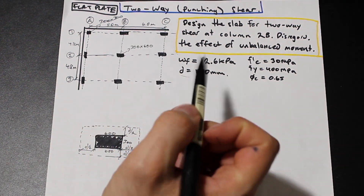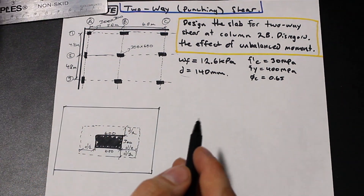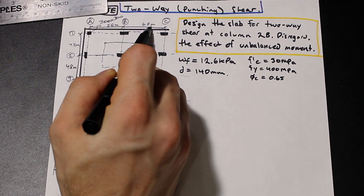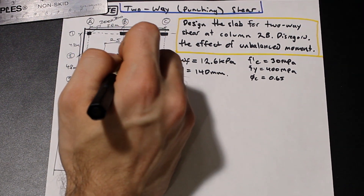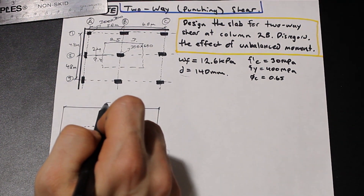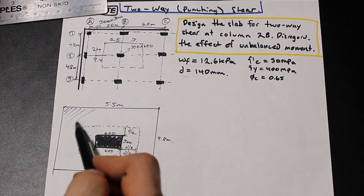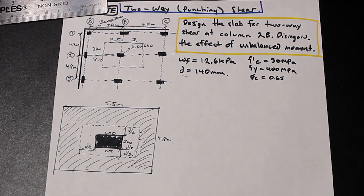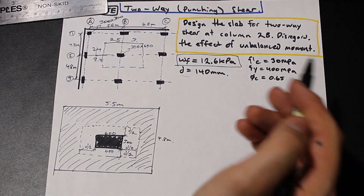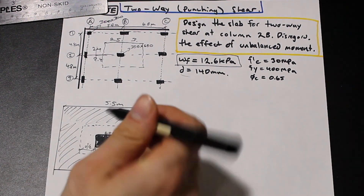Now we need to find the tributary area — that's the area whose load pushes down to separate the region around the column from the rest of the slab. This dimension is simply half the distance between adjacent columns: we have 5 m and 6 m spans, giving 2.5 m and 3 m on one axis, and 4.8 m spans giving 2.4 m and 2.4 m on the other axis. So the tributary area is 5.5 m by 4.8 m. Whatever factored load wf acts on this tributary area contributes to the punching shear.